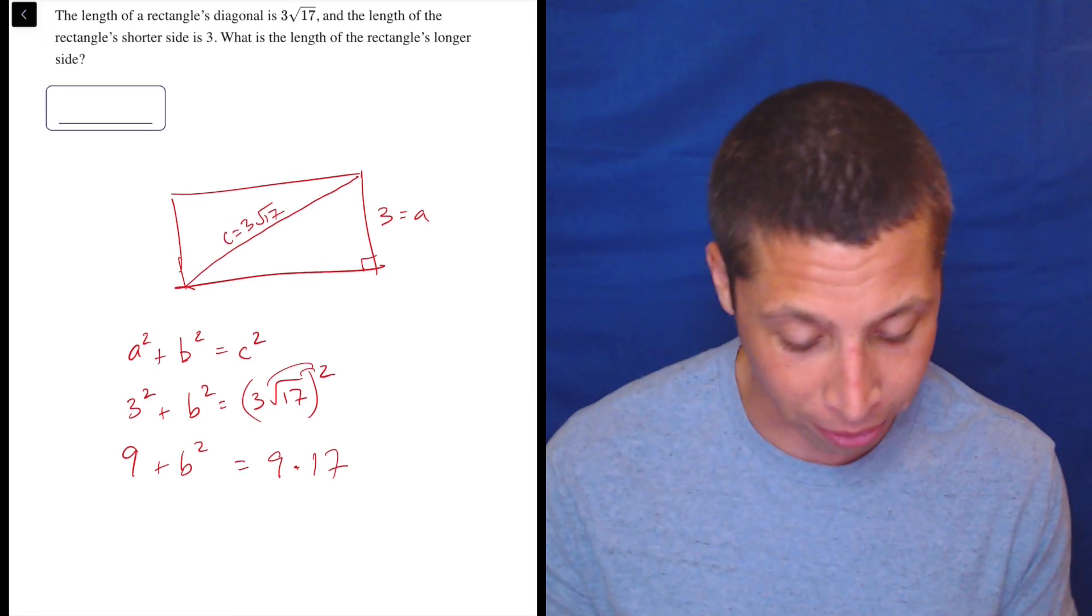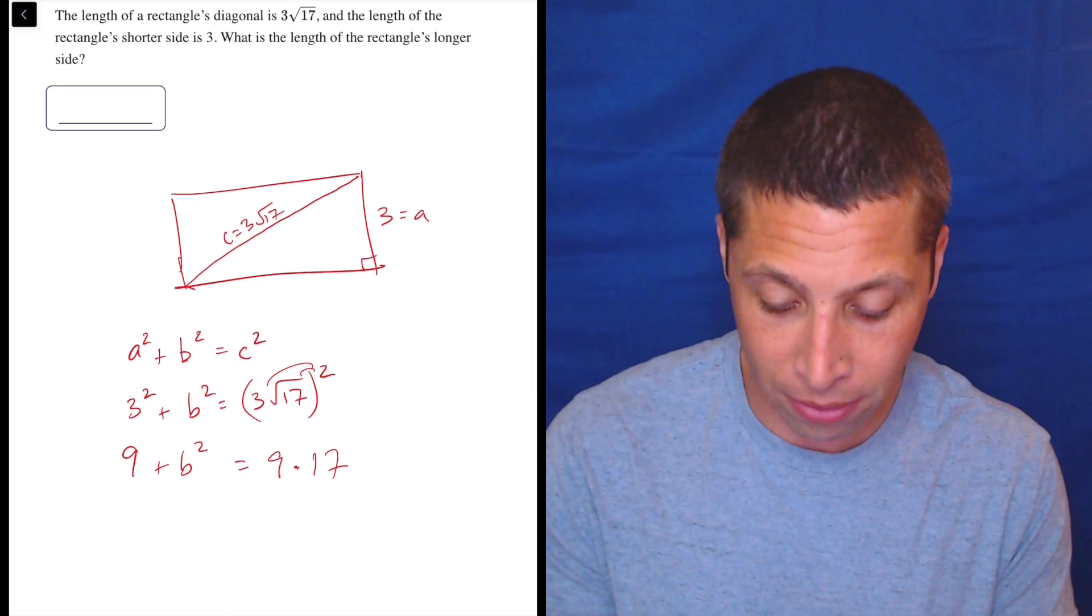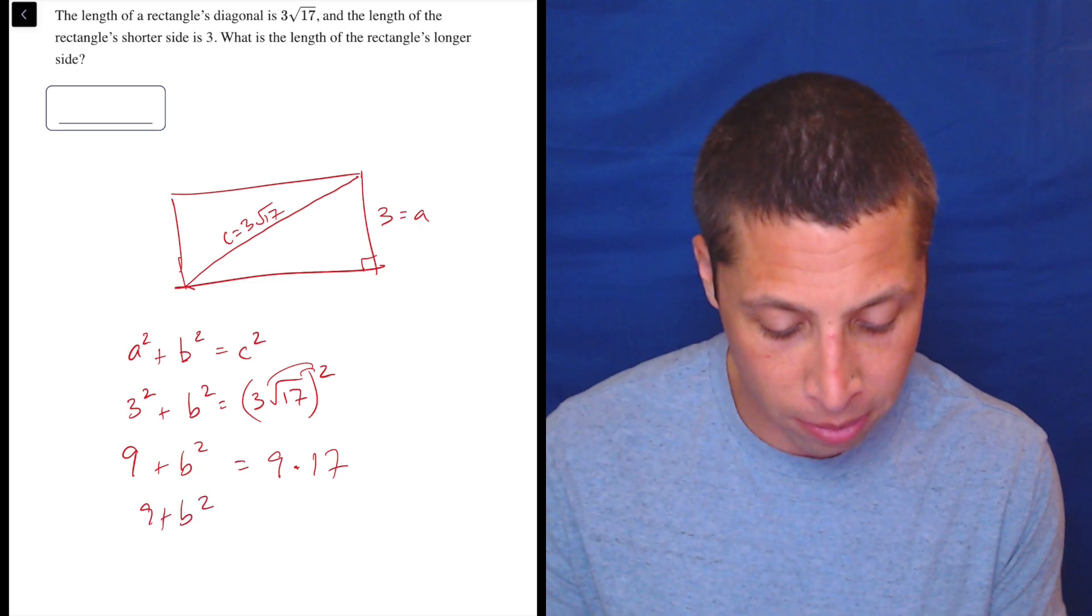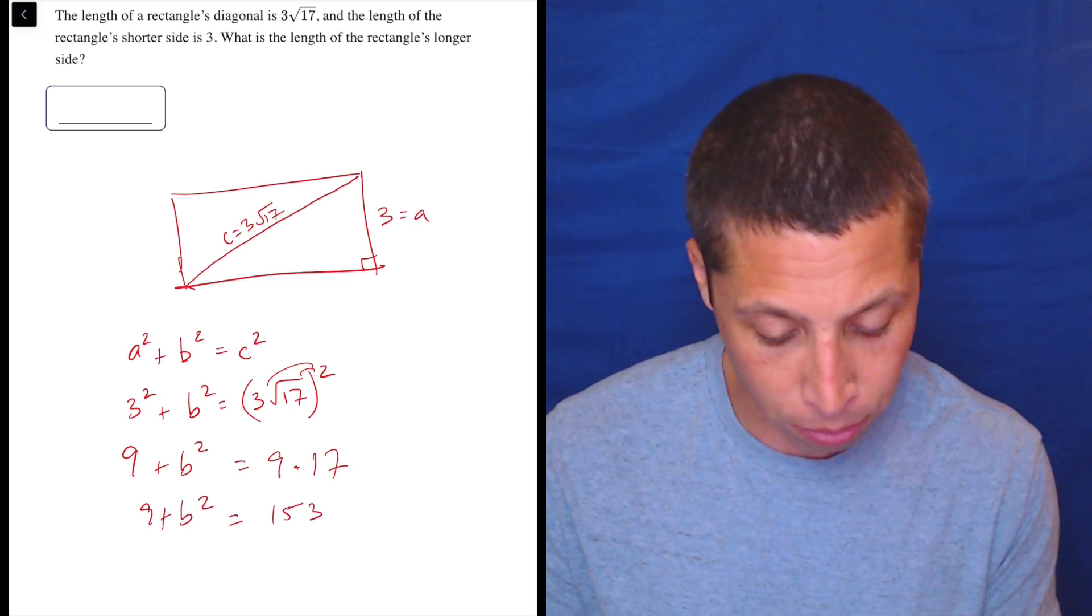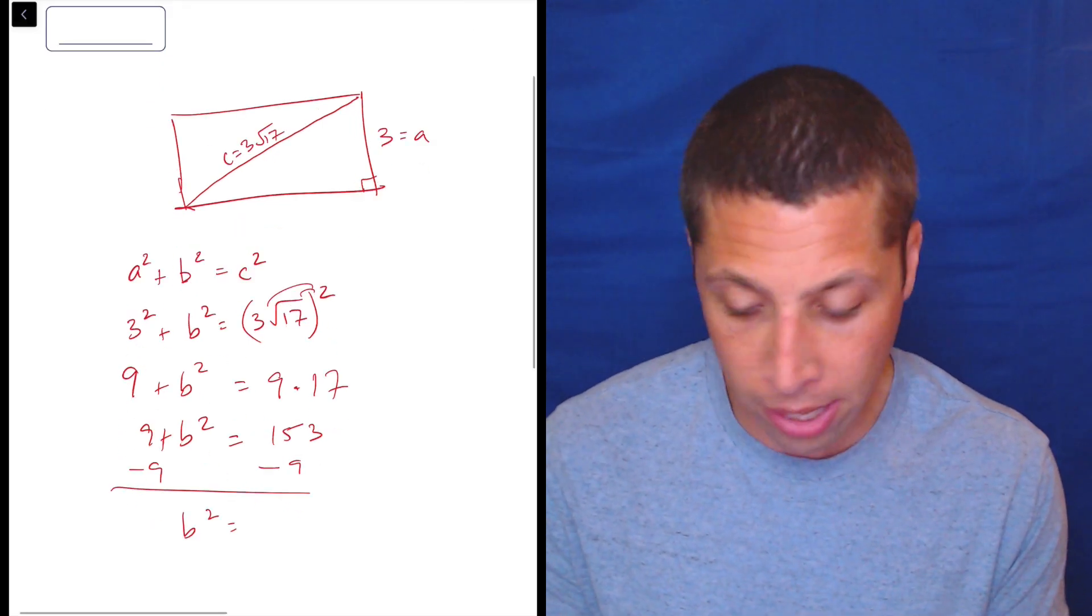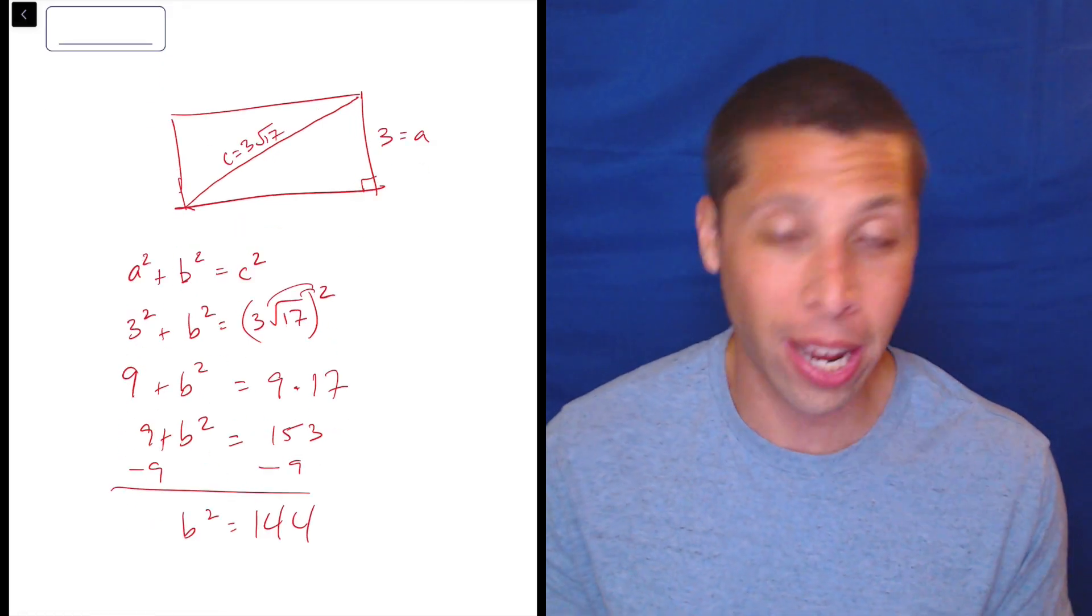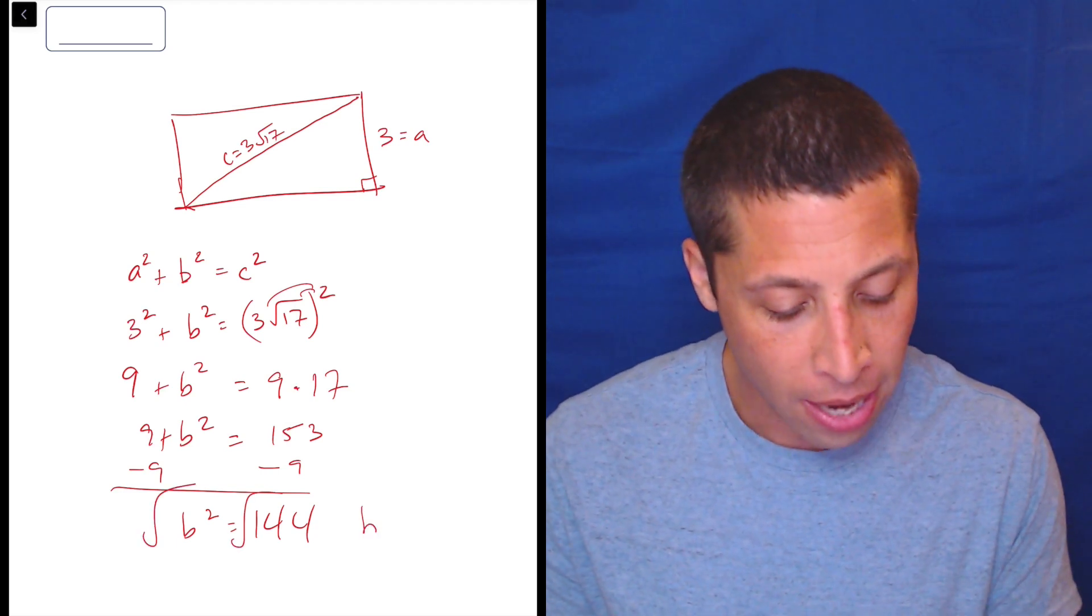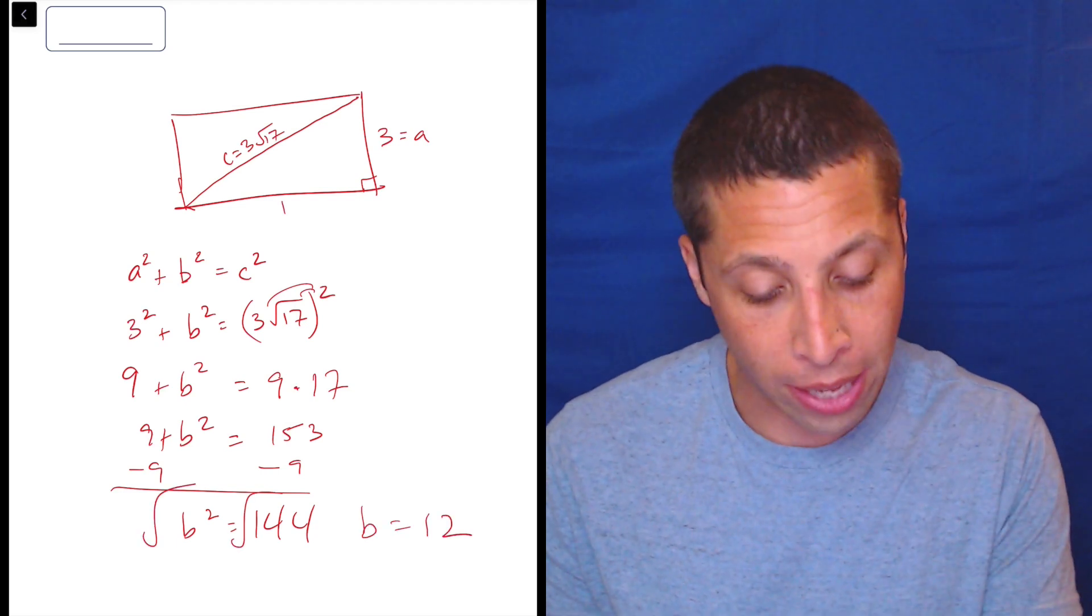So that part, I'm going to use the regular calculator for. So 9 × 17 = 153. So 9 + b² = 153. Subtract 9, subtract 9. That gives me b² = 144. And that one I know without having to do it in the calculator. Take the square root of both sides, and b = 12.